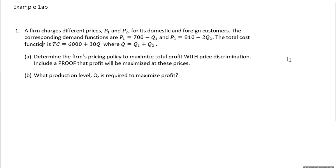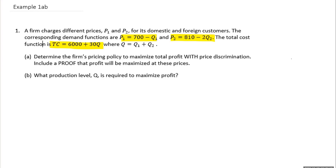I'm going to jump straight into an example, starting with unconstrained optimization. Today's lecture nine is all about constrained optimization, but I thought it would be best to start with a reminder of unconstrained first. Example one: a firm charges different prices P1 and P2 for its domestic and foreign customers. The demand functions are P1 = 700 − Q1 and P2 = 810 − 2Q2. The total cost function is TC = 6,000 + 30Q, where Q = Q1 + Q2. This is very similar to question 7 from your homework for module 8. Determine the firm's pricing policy to maximize total profit with price discrimination.